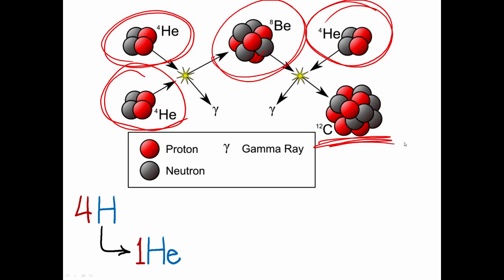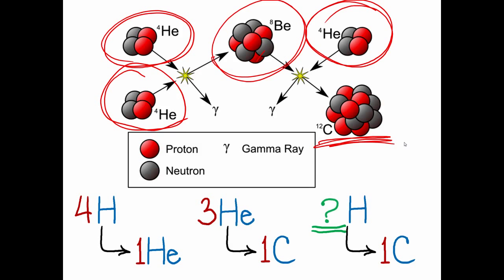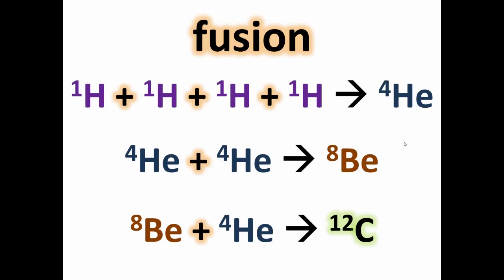It takes four hydrogens to make one helium, and it takes three heliums to make one carbon. So overall, to make one carbon, how many hydrogens do you need? Hopefully you do the math here — four times three equals 12. So it takes 12 hydrogens fused together in a certain sequence in order to make a single carbon atom. And the only place that this is capable of happening is in stars. To sum things up, we have a bunch of fusion reactions that have to take place in order to get a carbon atom — it's not a direct path, and many different steps have to happen.